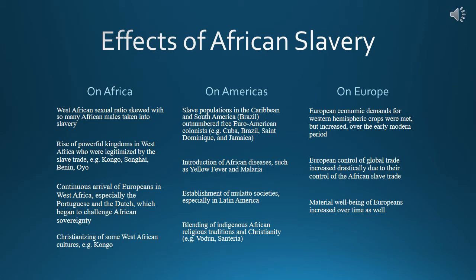Ultimately, transatlantic slavery had multi-regional consequences. In terms of Europe, European society's increasing demands for Western Hemispheric crops were met due to the productivity of African slavery during the early modern period. Additionally, the European control of global trade increased drastically due to their domineering role in the African slave trade. Thus, the material well-being of Europeans increased over time due to the volume and productivity of African slaves in the European Maritime Empires in the Americas.